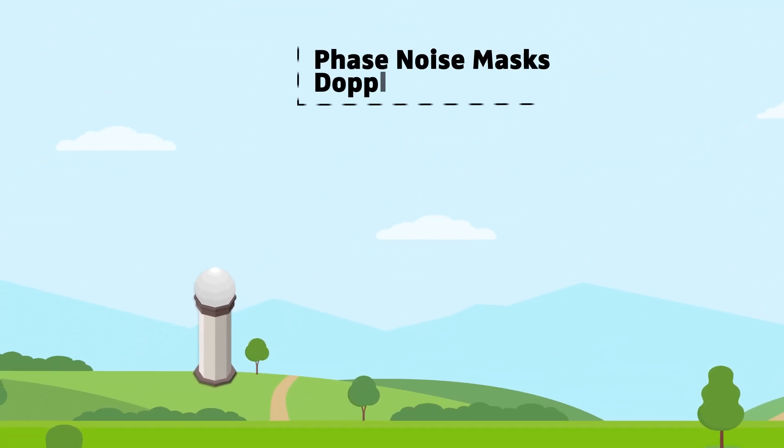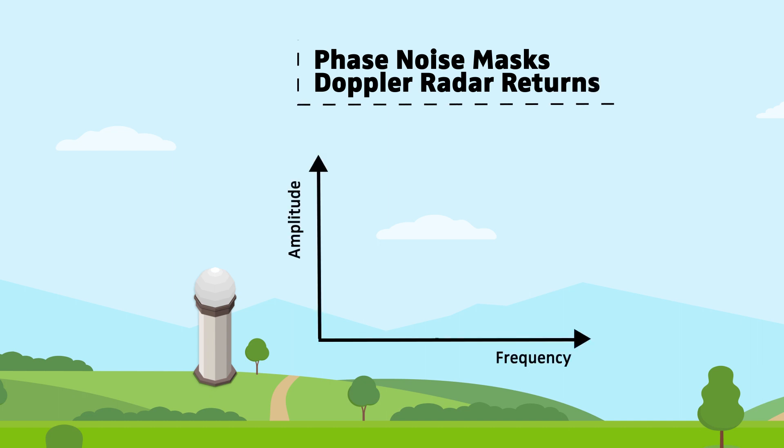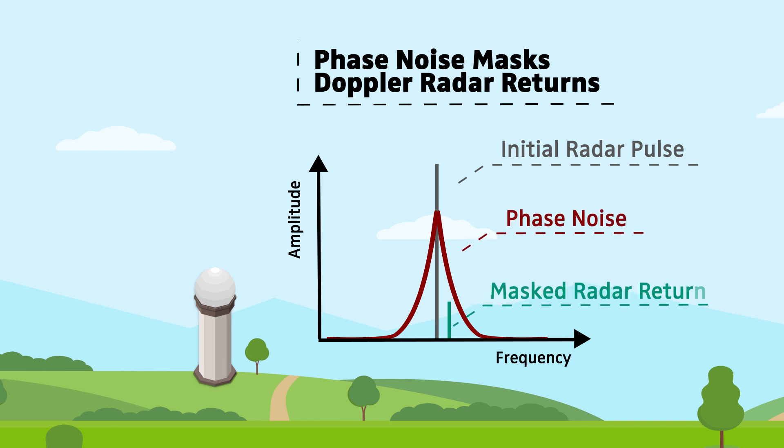Phase noise can limit a radar receiver's ability to process Doppler information. Slow moving targets with low frequency Doppler shifts and signals with low reflected power can be masked by excessive phase noise.